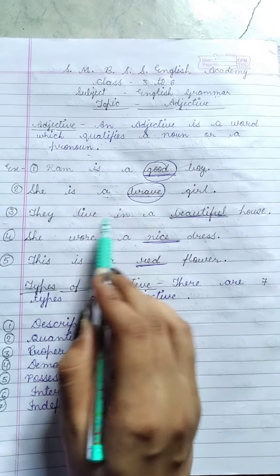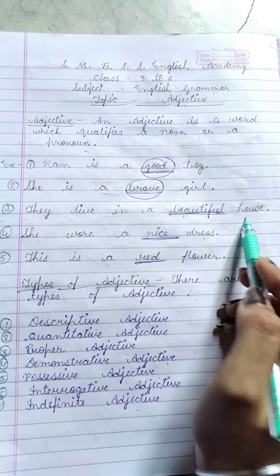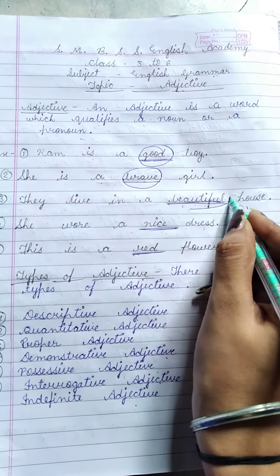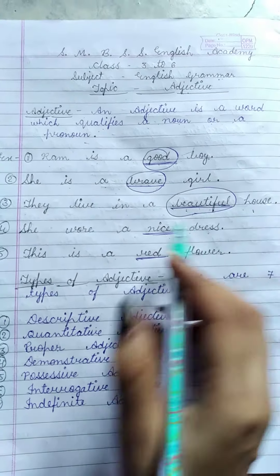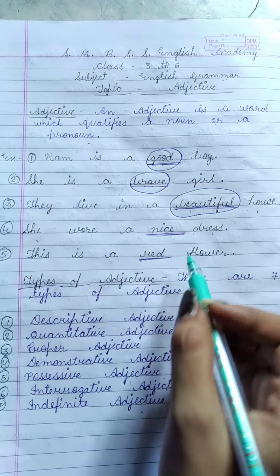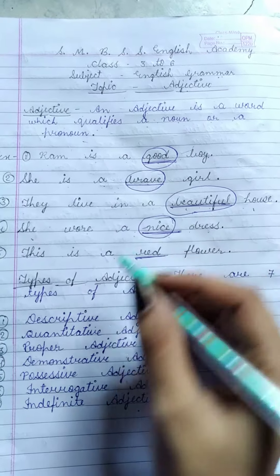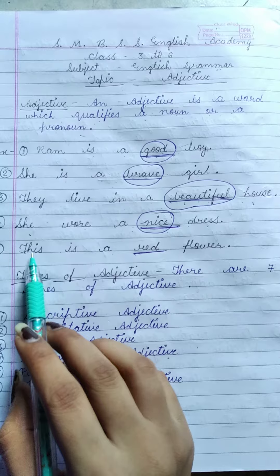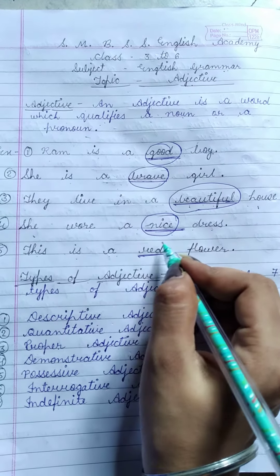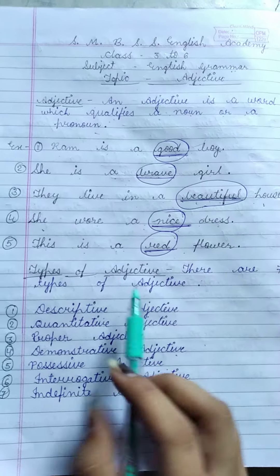Third example: They live in a beautiful house. Here, beautiful is the adjective. Fourth example: She wore a nice dress. Nice is an adjective. Fifth example: This is a red flower. How is the flower? Red. So red is an adjective.